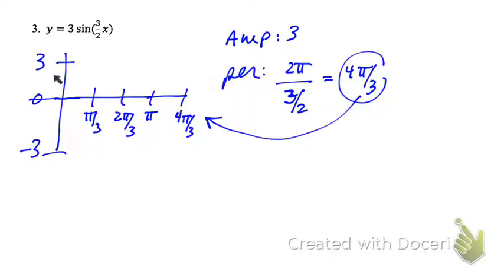The amplitude is 3, so I can label my y-axis max of 3, min of negative 3. Period 2π divided by 3 over 2 is 4 thirds π, so that's where I'm going to stop. Half of that is 2π over 3, half of 2 over 3 is 1 over 3, what's in the middle of 2 thirds and 4 thirds? 3 thirds, which is π.